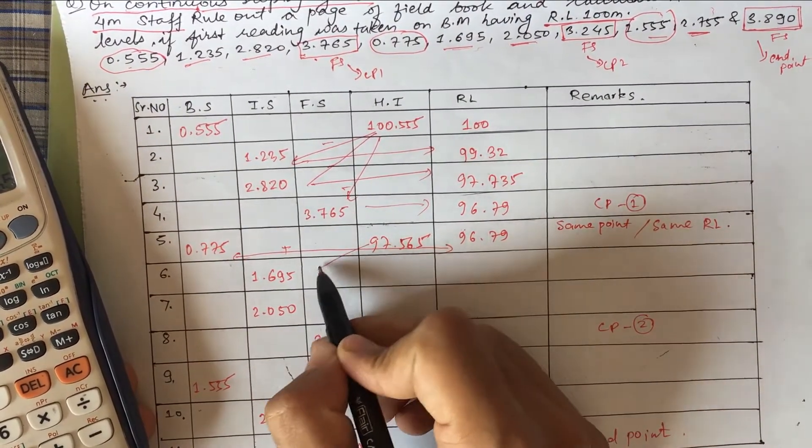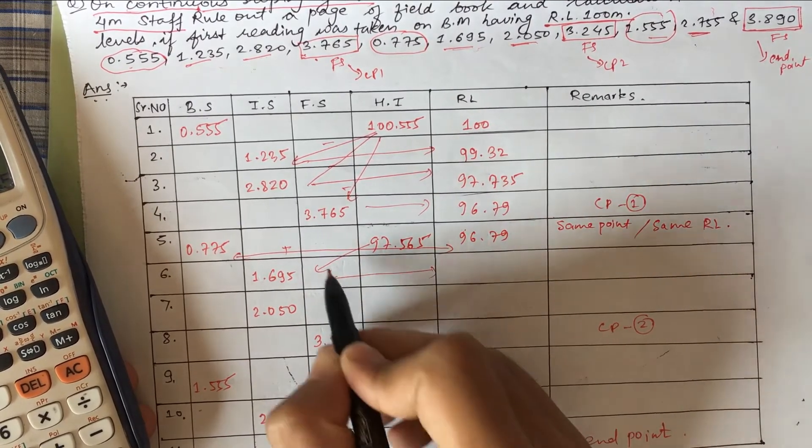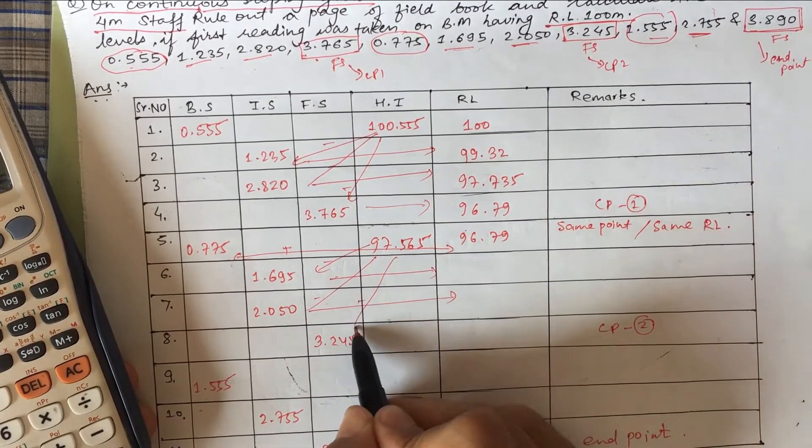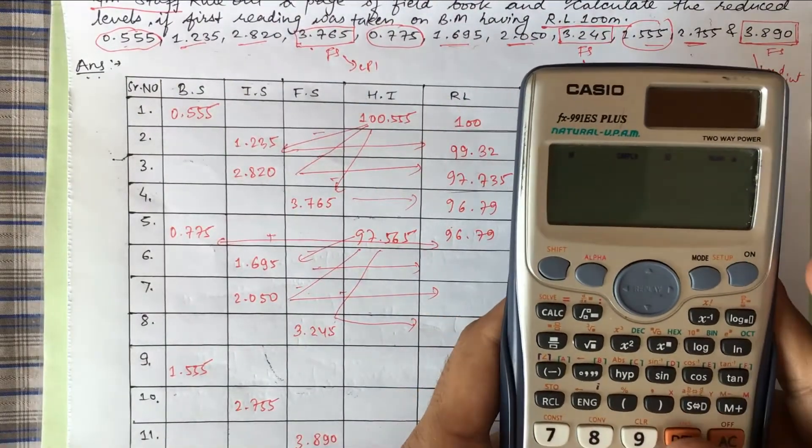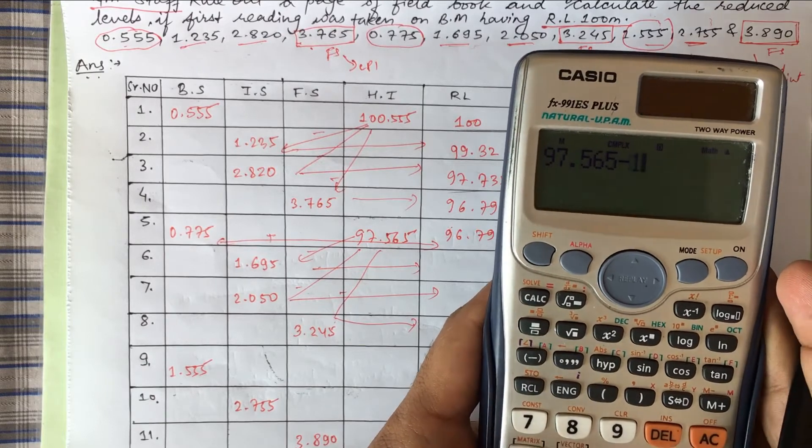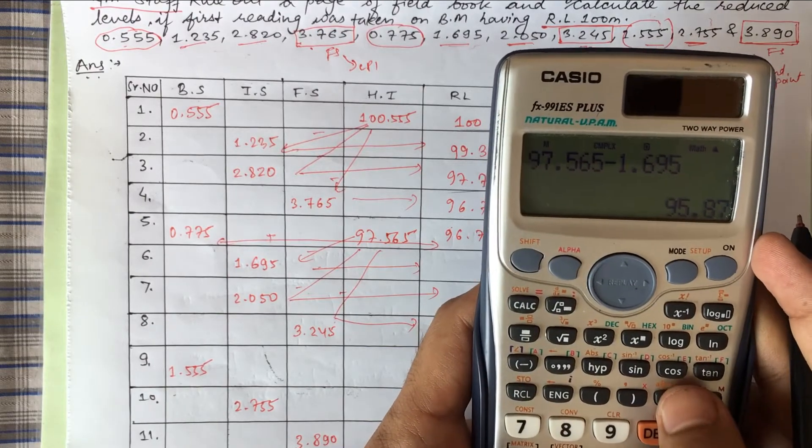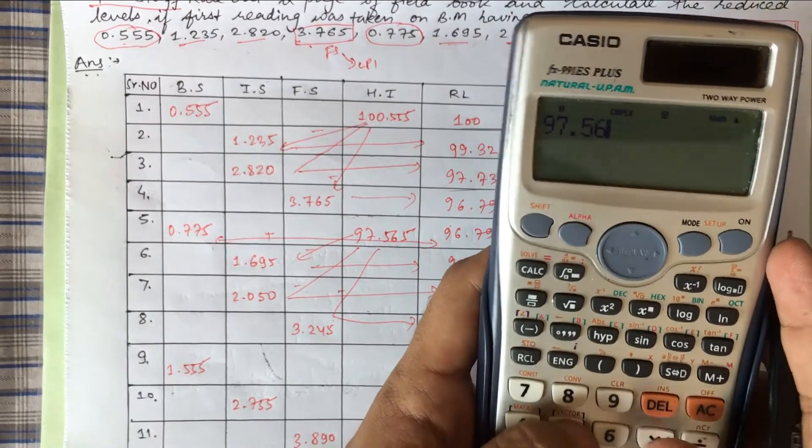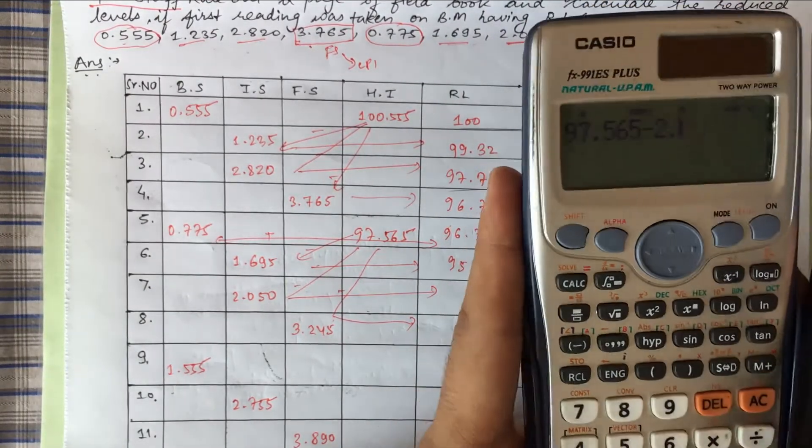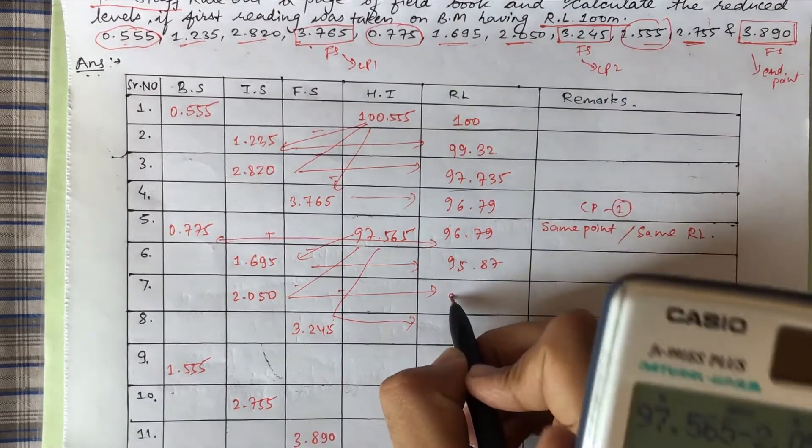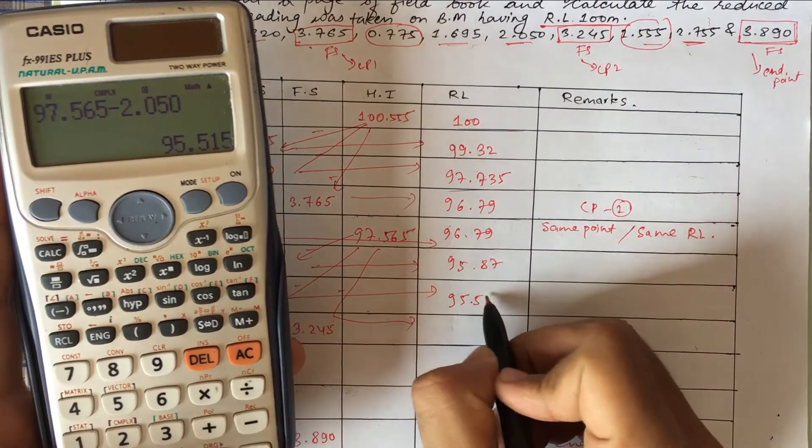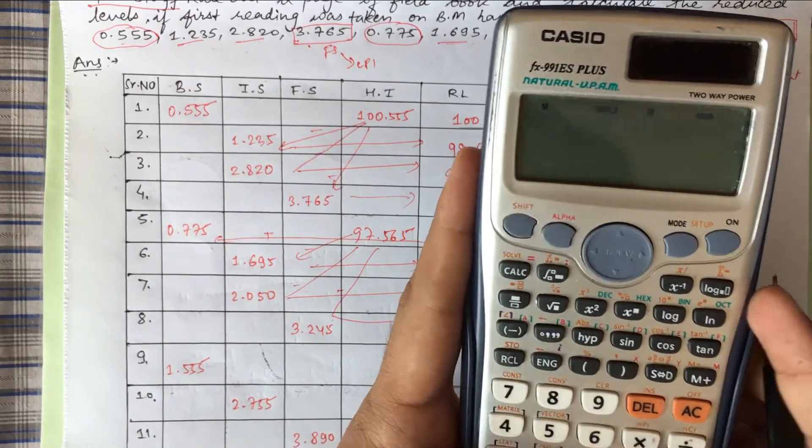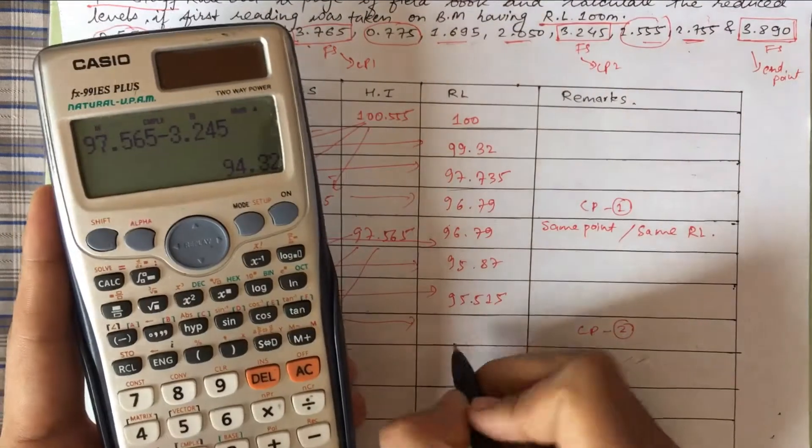Now again the same process. This one will come here negative. We should subtract it and write here. 97.565 minus 1.695 equals 95.87. 97.565 minus 2.050 equals 95.515. Again, 97.565 minus 3.245 equals 94.32.